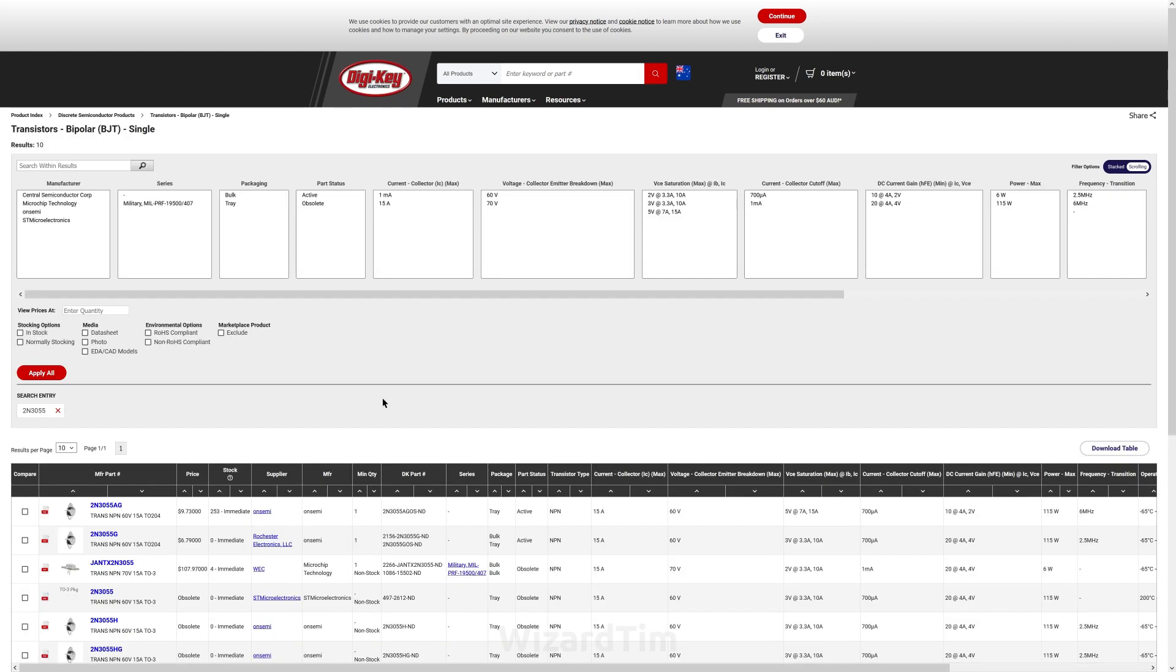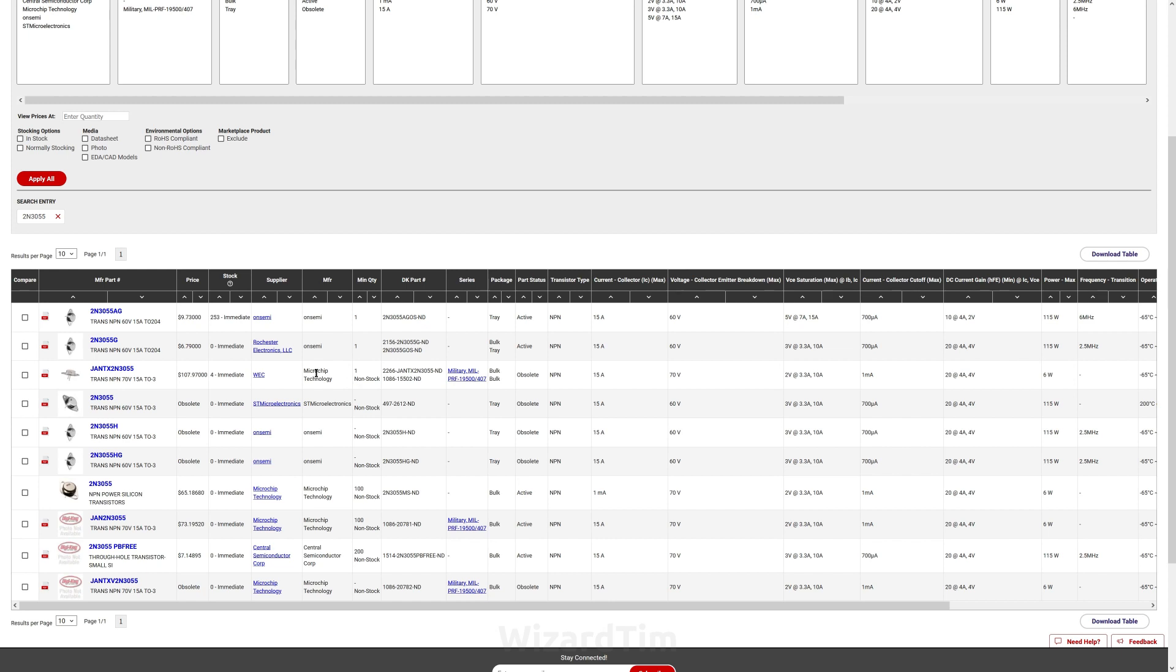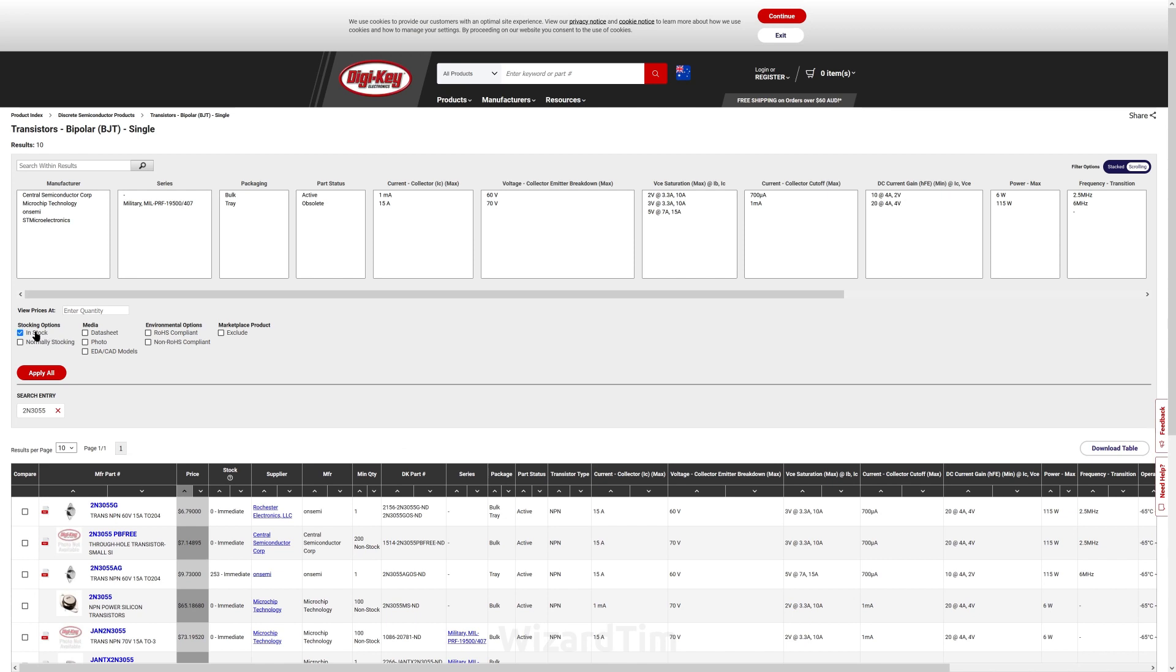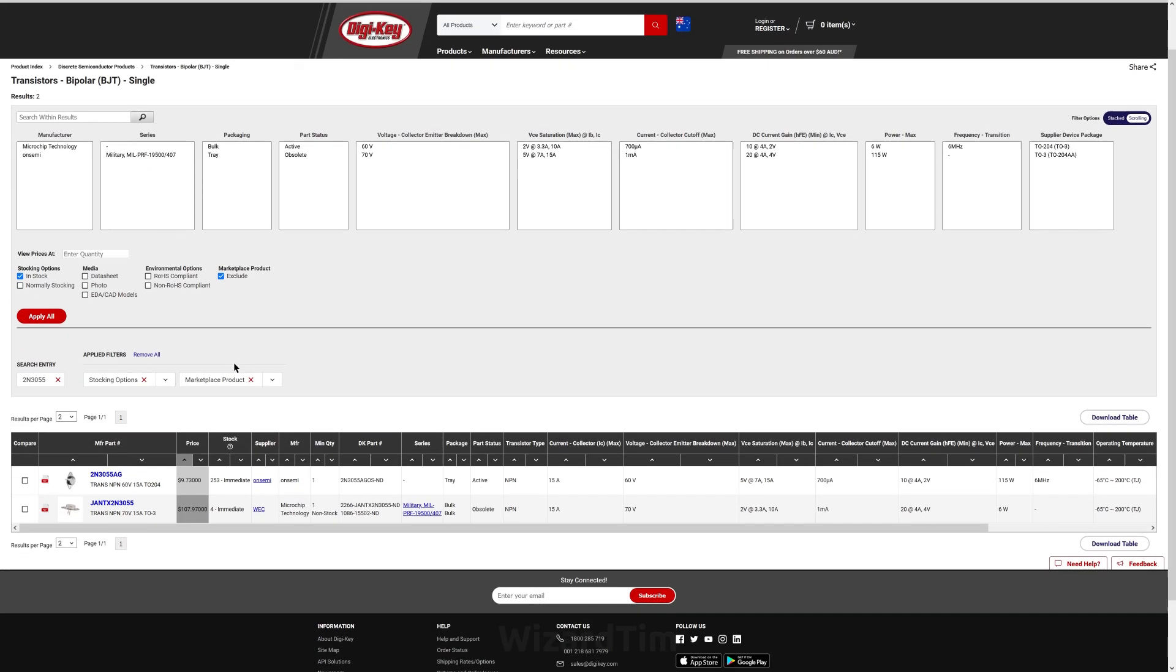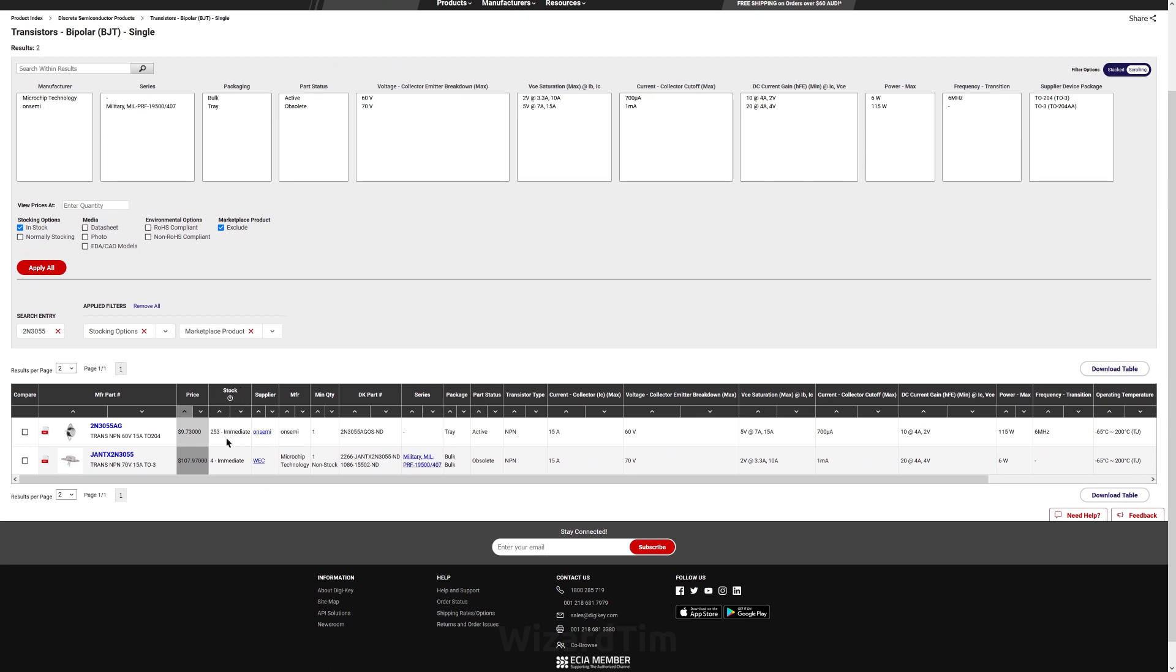Although, they do have some more, 107 in stock. Also exclude marketplace items, because I do not trust this Rochester Electronics. I swear they mislead people on how many they have in stock. I've seen them with millions in stock, which is not feasible. But searching for that, we've got two left, one for 107, which no chance.